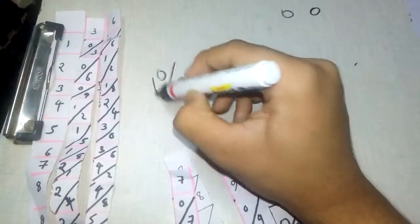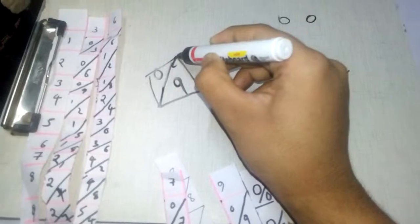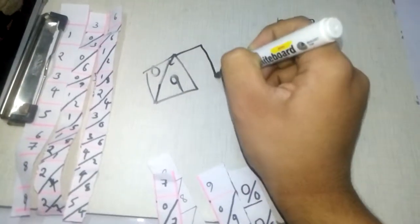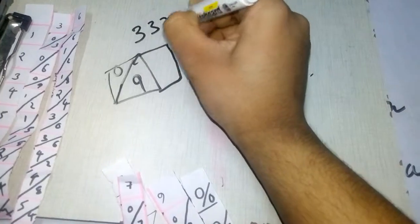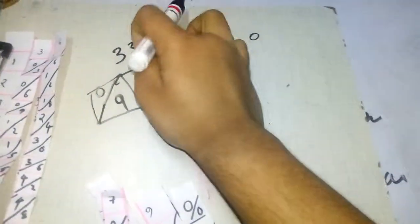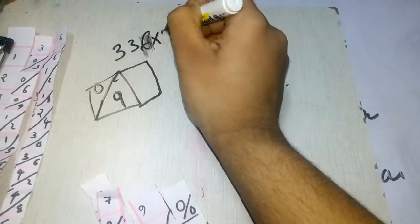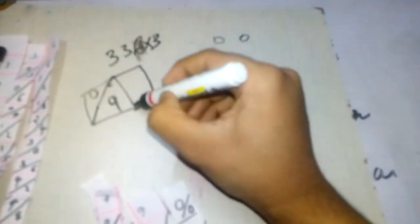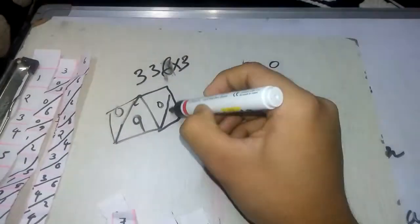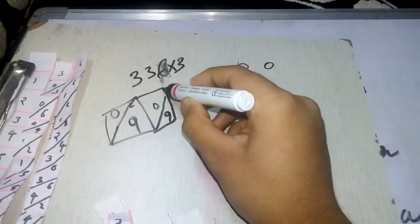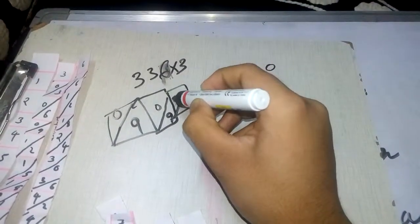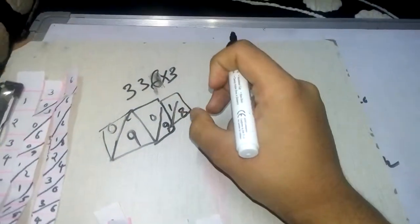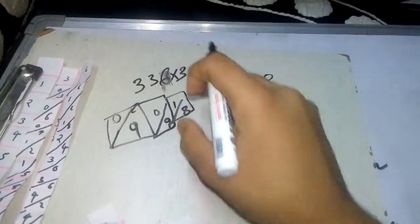Again we start. The question is 336 into 3. Again it will be 0 9, then again it will be 1 8. Let us add this number.